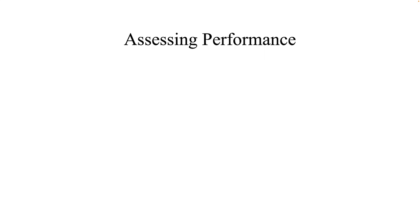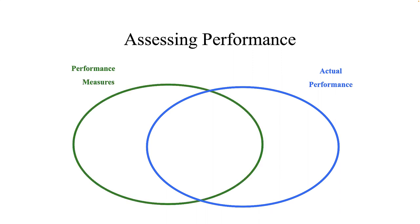Here is a Venn diagram of what we hope to measure in a performance appraisal and what sometimes actually gets or does not get measured. The area in the middle of the overlap is a valid assessment, but the two ellipses do not fit directly on top of each other — we have imperfect measurement. The leftmost area in the green ellipse is criterion contamination: it is something that is measured but should not be. For example, some performance appraisals are contaminated by things like volunteering to work on unpaid charity drives. Unless that is part of the job description, performance on it should not be measured. Sometimes, even though we know our formal appraisal is not supposed to cover such activities, we do them anyway hoping that being a so-called good soldier will positively impact our formal appraisal scores.